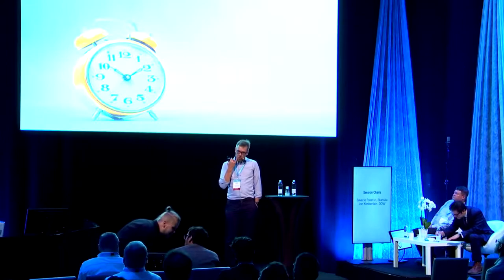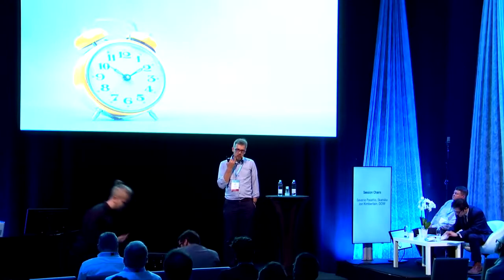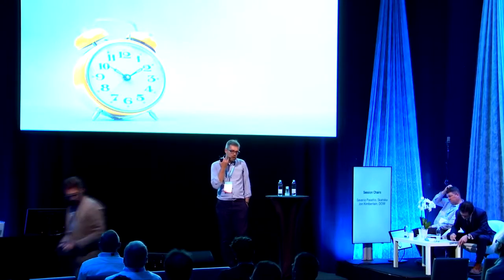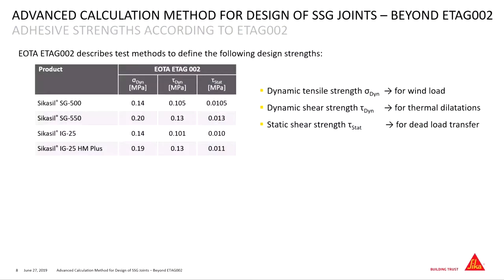Now I want to go shortly through two topics. The first topic is the better reflection of load duration acting on the joints, or loads with different kinds of load duration. The second one would be bending stresses. For load duration, just as an introduction, this is a system we know since years — we have all the values determined based on existing standards.